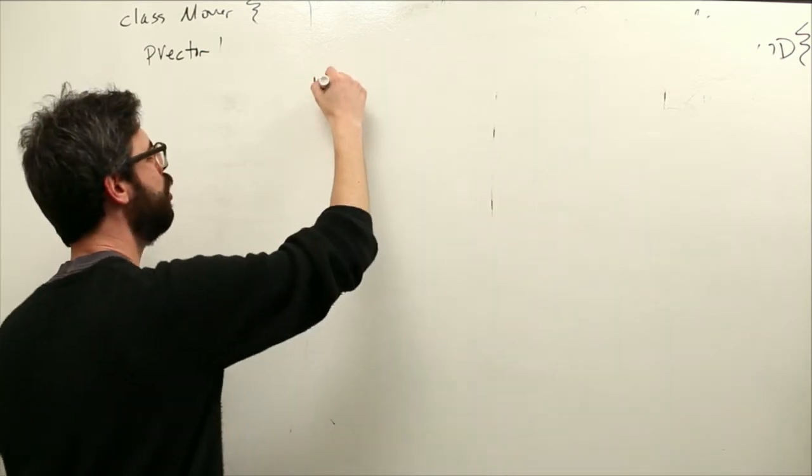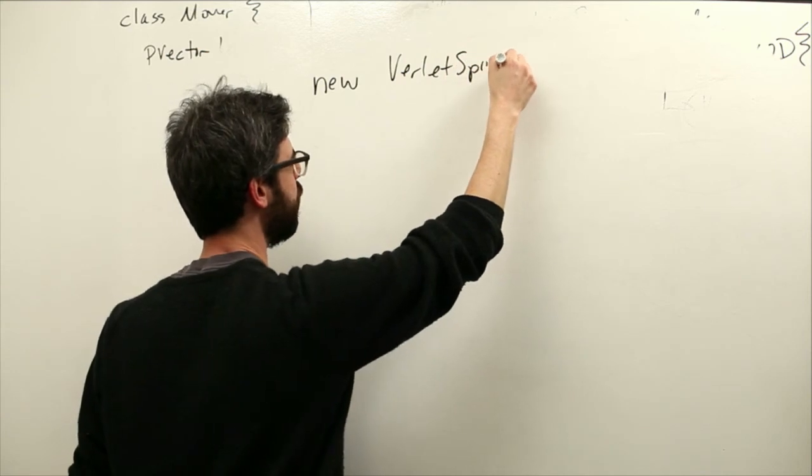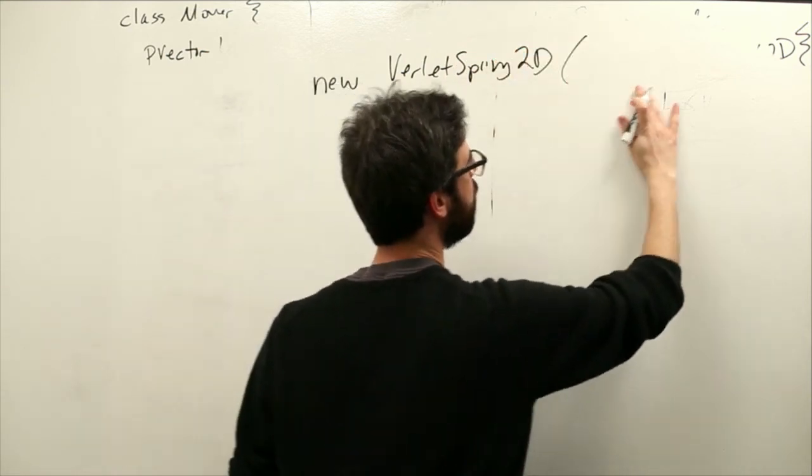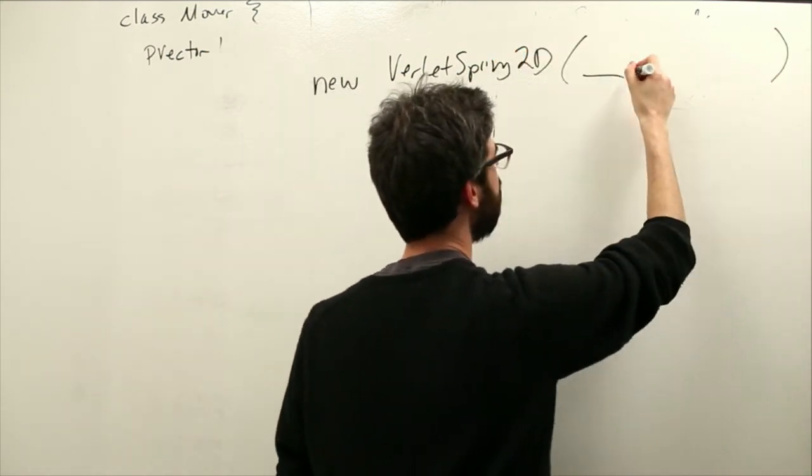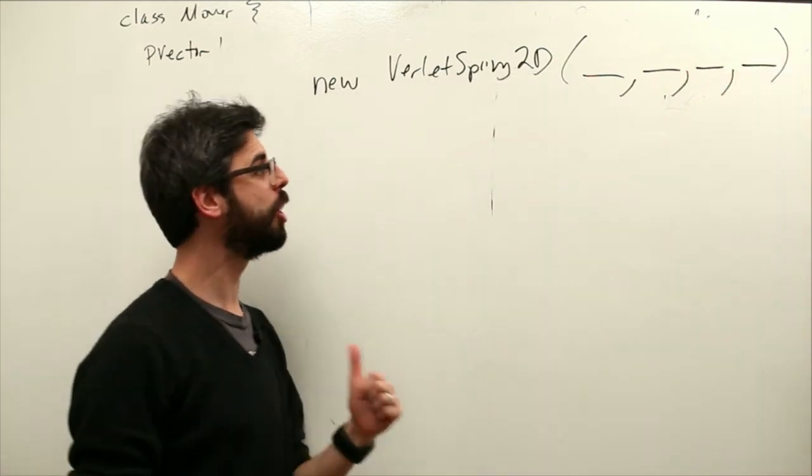And the way that we make a spring is by saying new verlet spring. And in this case, it's going to be 2d. And we have to put four things here.